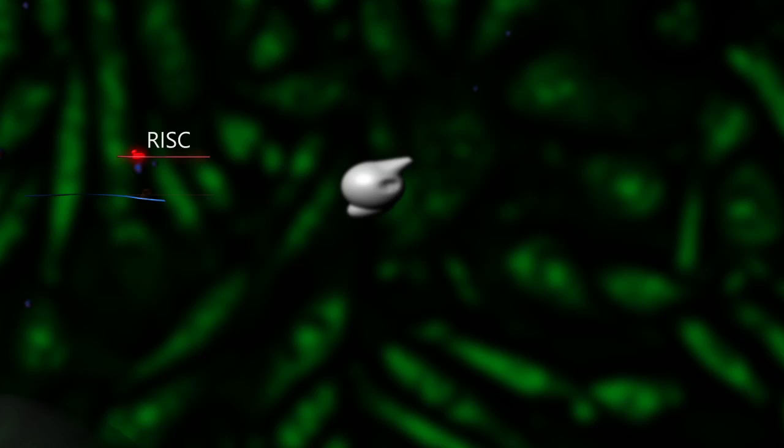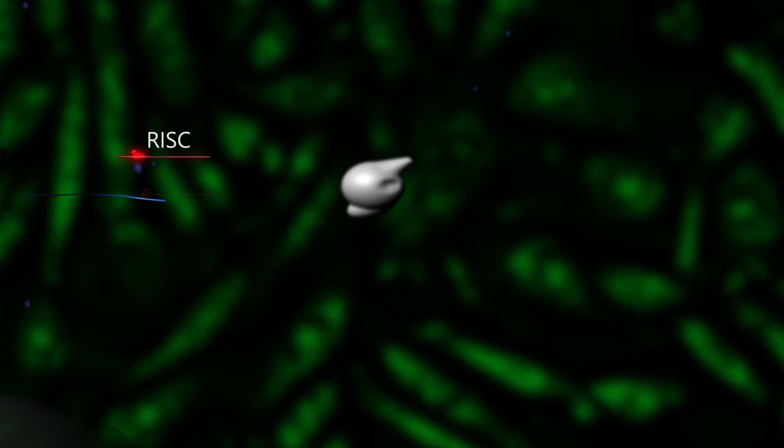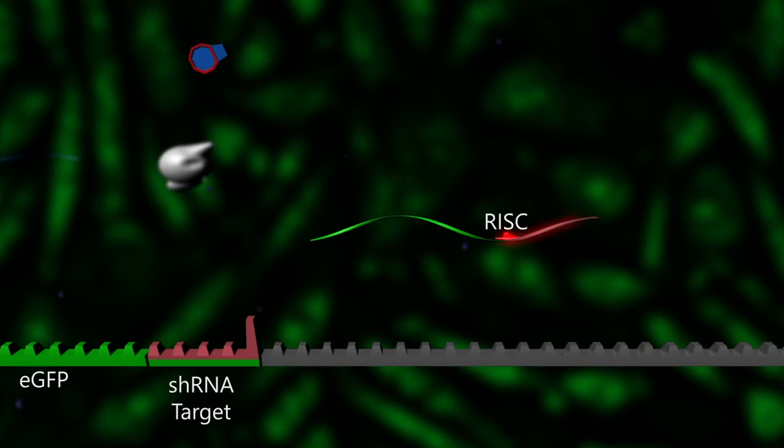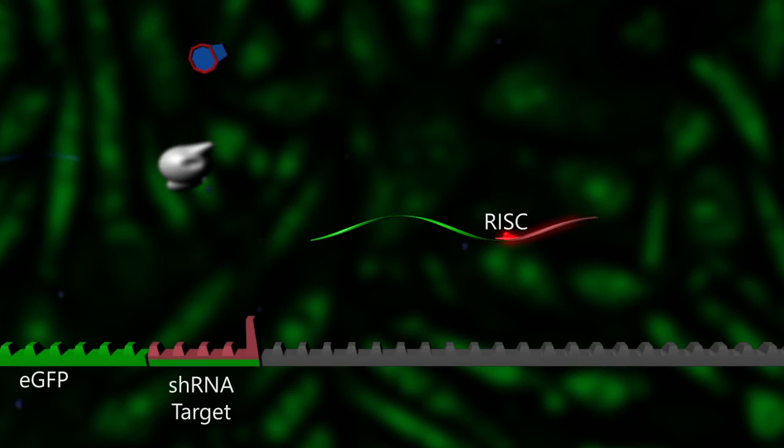Finally, the siRNA strands separate to activate the RISC, and the complex binds to a complementary sequence that was strategically placed in the 3' untranslated region of the target mRNA. Once bound, the mRNA is degraded. This reduces leakiness and results in near-complete silencing of GFP.